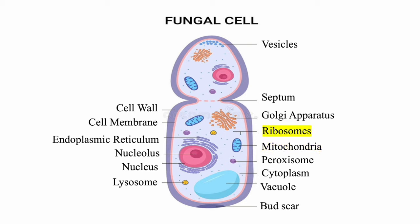Ribosomes are the site of protein synthesis. The vacuole serves as a storage site for important nutrients such as amino acids, ions, and other compounds. The vacuole can also store waste products until the cell can dispose of them. The cell membrane is a semipermeable membrane that encloses the cell and controls the movement of substances in and out of the cell. The endoplasmic reticulum is a network of membrane tubules and sacs — the ER has a rough side with ribosomes and a smooth side that lacks ribosomes and is involved in lipid synthesis. Lysosomes contain digestive enzymes and break down waste materials and cellular debris.